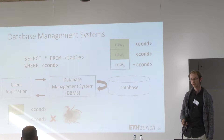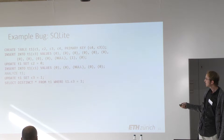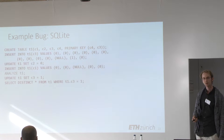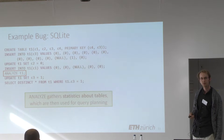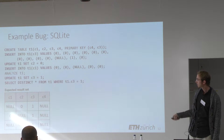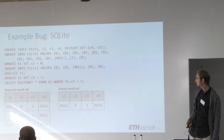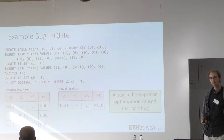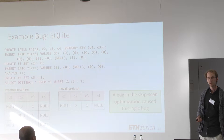Here is one specific logic bug we found in SQLite. We create a table, insert data, update some values — all quite standard SQL. The analyze statement provides statistics about tables which the query planner uses for more efficient planning. The result set we would expect has three rows, but the actual result SQLite returned before we reported this bug was only a single row. A bug in the skip scan optimization of the query planner caused this. This bug was classified as high-severity by the developers and had existed in SQLite for a couple of years before we found and reported it.